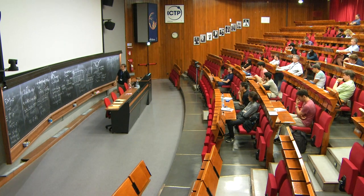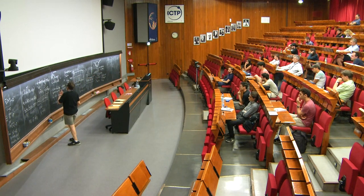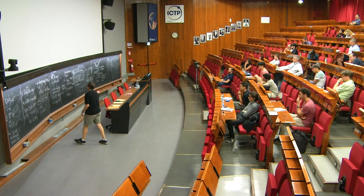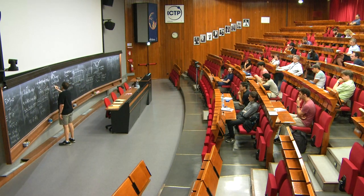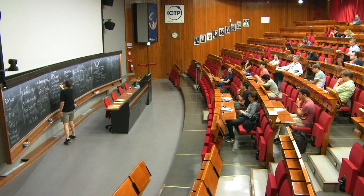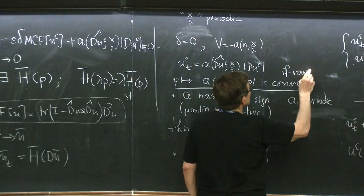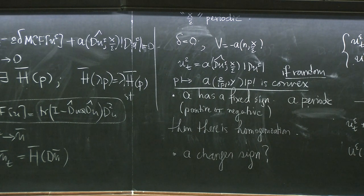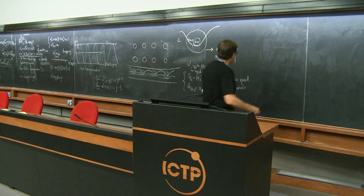All these results hold true in the periodic case, and in the random case whatever that means — but one has to introduce an additional assumption: that the map p ↦ a(p/|p|)|p| is convex. In the random percolation setting you have to assume there is a component going all the way out.